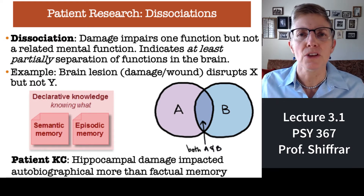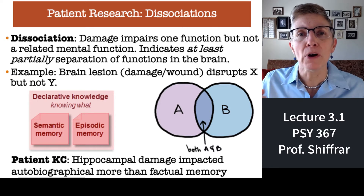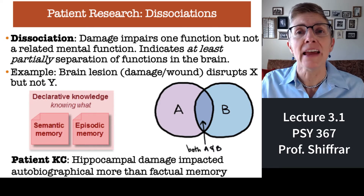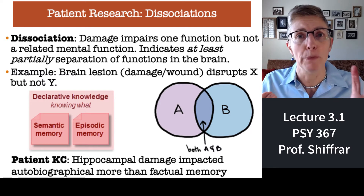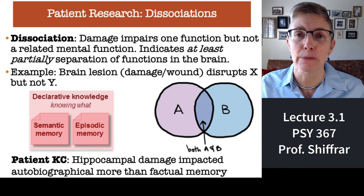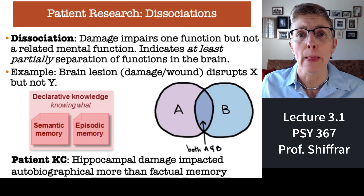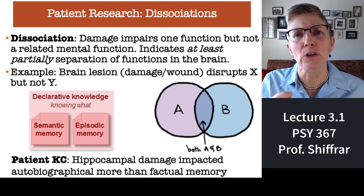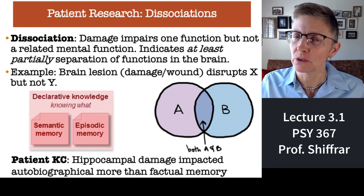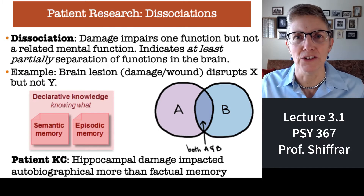Dissociation is thought to occur when, maybe as a result of a stroke or some sort of accident, one part of a person's brain is damaged and that damage causes them to lose some ability, but they retain all other abilities. I want to start by talking about a patient named KC. KC had damage to his brain as a result of a motorcycle accident, and that caused him to lose autobiographical memories — memories about his own life — but he was able to retain memories of general knowledge and information.